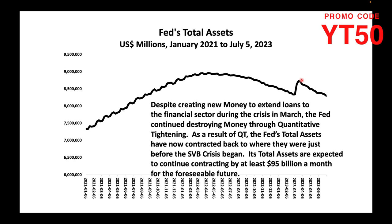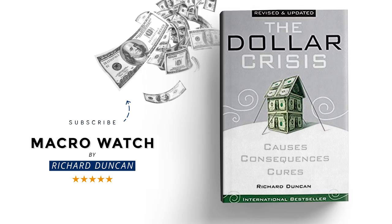Despite creating new money to extend loans to the financial sector during the crisis, the Fed continued destroying money through quantitative tightening. As a result of QT, the Fed's total assets have now contracted back to where they were just before the SVB crisis began.